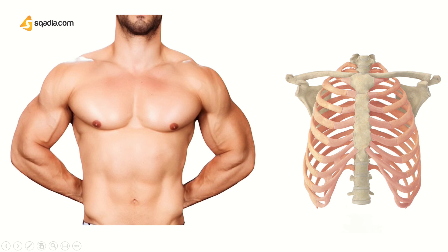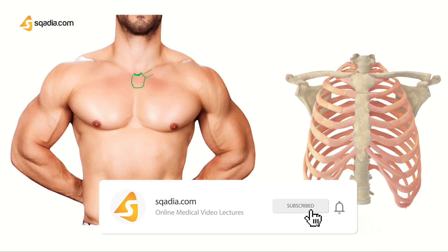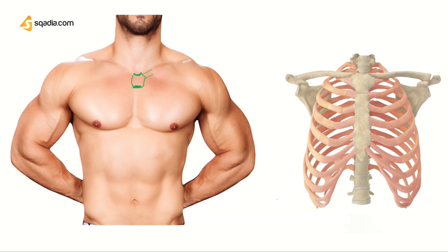Now, how would we identify the heart sounds when you can't see the ribs on a body? First, find the suprasternal notch and the manubrium, then feel for the sternal angle. Once you know where the sternal angle is, find the second rib. From there you can count the spaces: this is space number two, then space number three, four, and five.